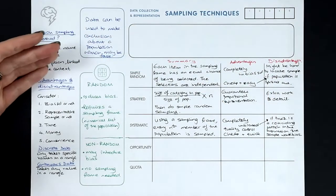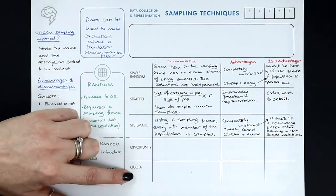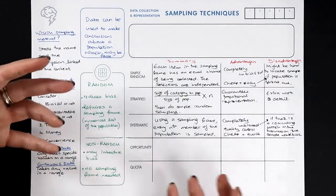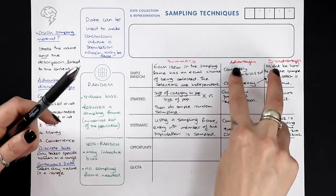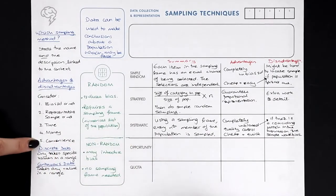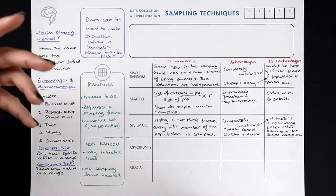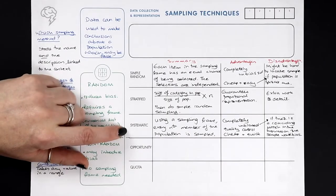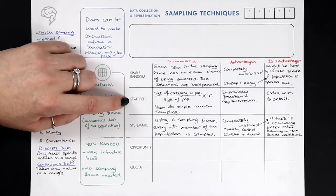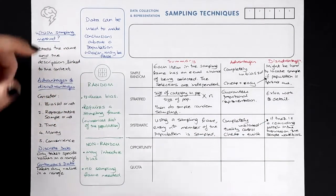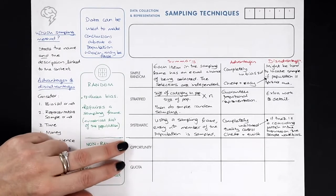The aim is not to memorize these words but to understand how the methods work so that advantages and disadvantages make complete sense to you. For example: quality control off a factory line — use systematic sampling. Something dependent on age or gender — use stratified sampling to ensure a representative sample.